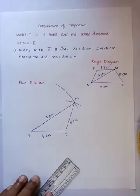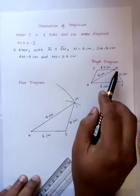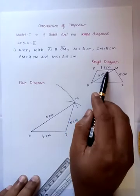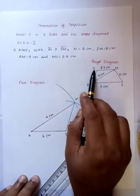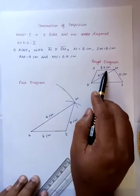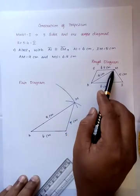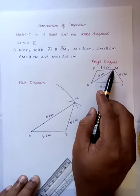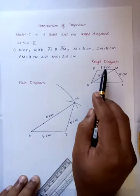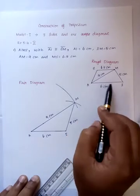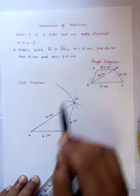Now, from point M, we need to mark MS equal to 6.5 cm. Since AI is parallel to SM, we need to draw a parallel line from M.